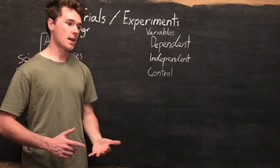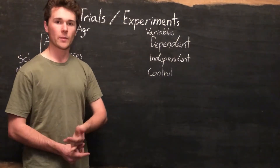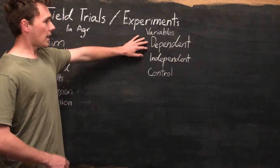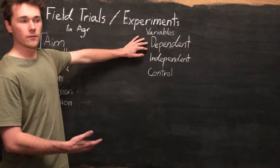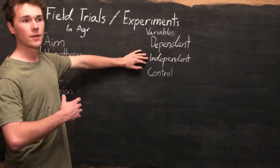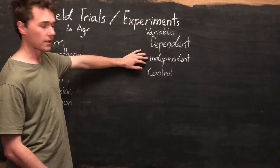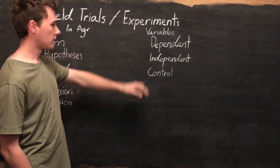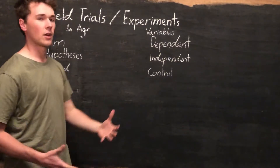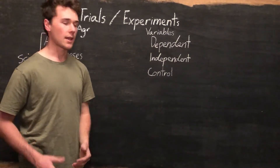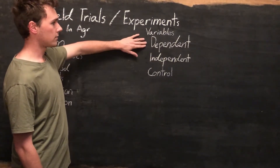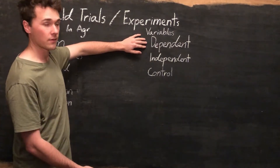In this case we were looking at the biomass production of oats — we wanted to know how the growth of oats was affected by the application of this product. That's the dependent variable. All of science is just looking at how the independent variable affects the dependent variable.